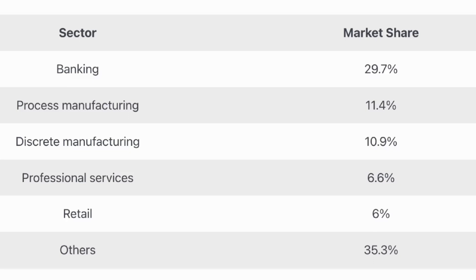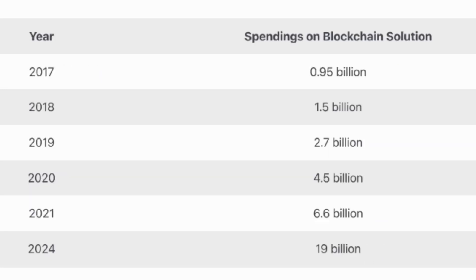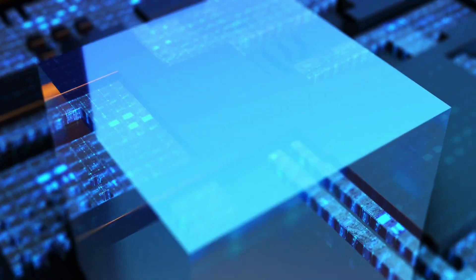If you want to step into banking, you need to understand what products are available in the banking space and what products you can build to facilitate the system. Looking at cryptocurrency spending from 2017 to 2024: in 2017 total spending was $0.95 billion, growing to $1.5 billion in 2018, $2.7 billion in 2019, $4.5 billion in 2020, $6.6 billion in 2021, and $19 billion projected for 2024. These numbers are growing exponentially as more projects enter the space.